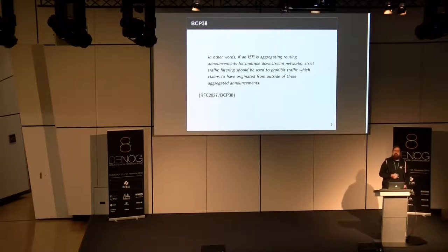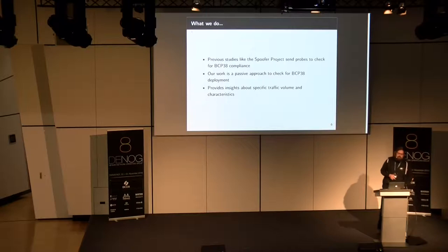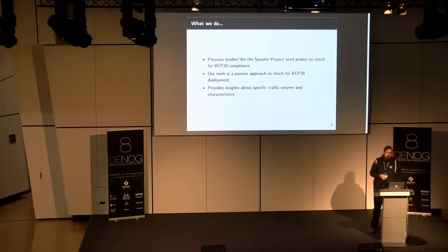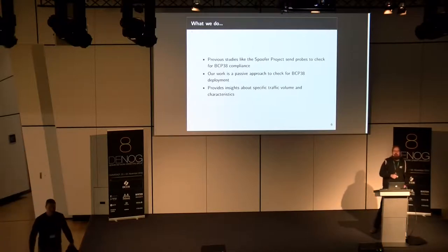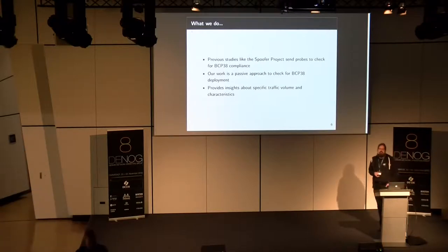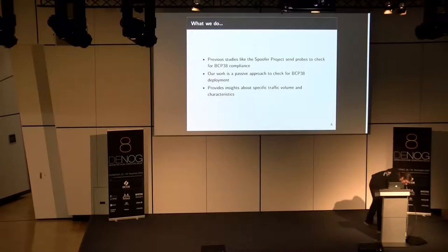Sounds easy, right? So why is not everybody doing that? In contrast to other studies, we use a passive approach — we look at flow data. Other projects like the Spoofer project are sending probes: they spoof addresses, send traffic to their sensors, and if the packets arrive, they know the network they originated the probe from is vulnerable to spoofing. What we did, as a passive approach, is look at flow data to get insight on traffic volume and the characteristics of this traffic.